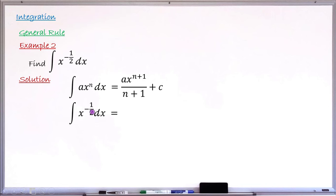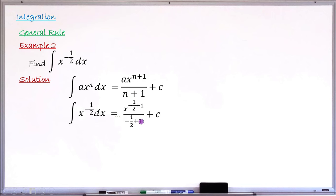Substituting into the formula, I'm going to have x raised to the power of minus one-half plus 1, replacing n with minus one-half, all over n plus 1, which gives minus one-half plus 1, then plus the constant of integration C.